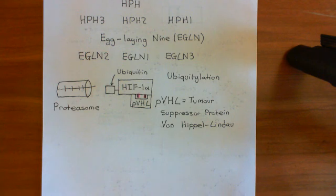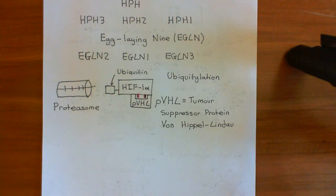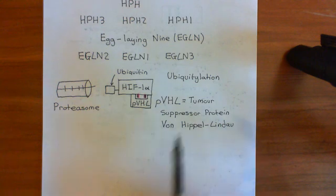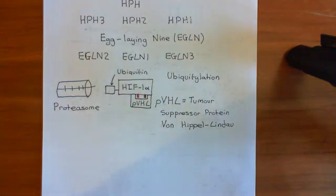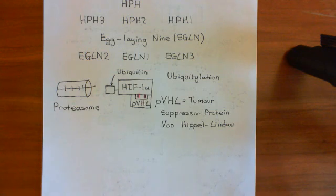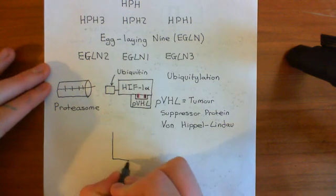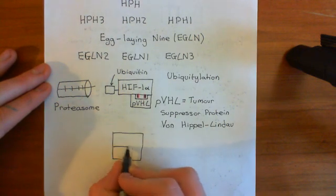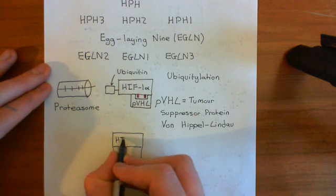In hypoxic conditions, you will not get hydroxylation of those proline residues in the ODD of HIF-1α. Therefore, the von Hippel-Lindau tumor suppressor protein cannot bind, you won't get ubiquitination, and therefore won't get destruction. Without oxygen, HIF-1α is not destroyed. It remains within the cell and can dimerize with HIF-1β proteins, which are present in the cell all the time, creating a HIF-1 complex.